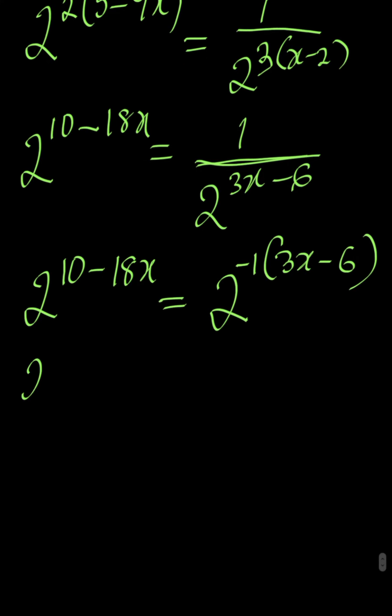Then 2 to the power of 10 minus 18x is equal to 2 to the power of minus 1 times 3x is minus 3x, and minus 1 times minus 6 is plus 6. The bases are now equal, so we can now equate the power.